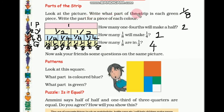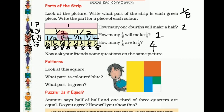So your question is: write what part of the strip each green piece is. Each green piece is 1 eighth part of the strip. Then write the part for a piece of each color: each green piece is 1 eighth, each blue piece is 1 fourth part, each yellow piece is half part of the strip, and each pink piece is 1 whole part of the strip.